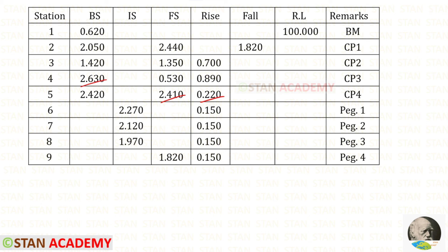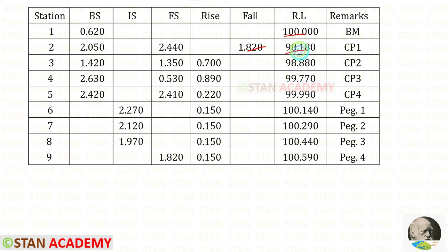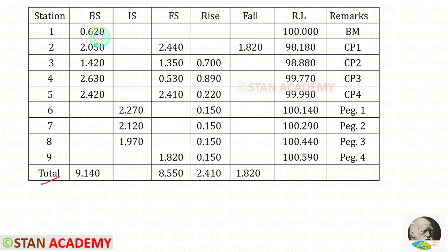Now we need to find the reduced levels. The first RL minus the fall gives the next RL, then adding a rise gives the next, and so on for each subsequent station. In a similar way we find these three remaining reduced levels. After adding all backsights we get the total, and after adding all foresights we get their total.